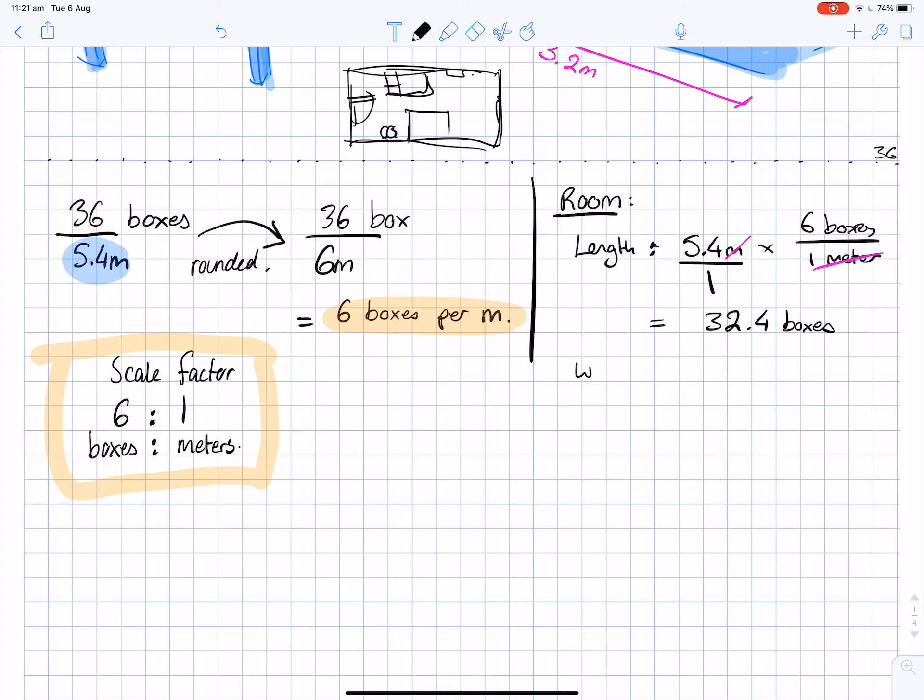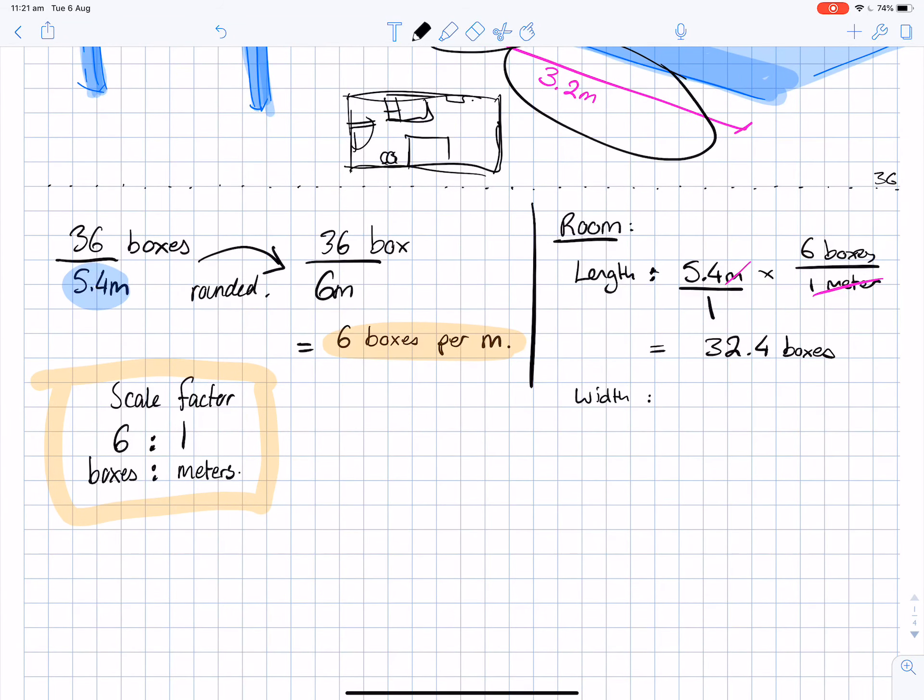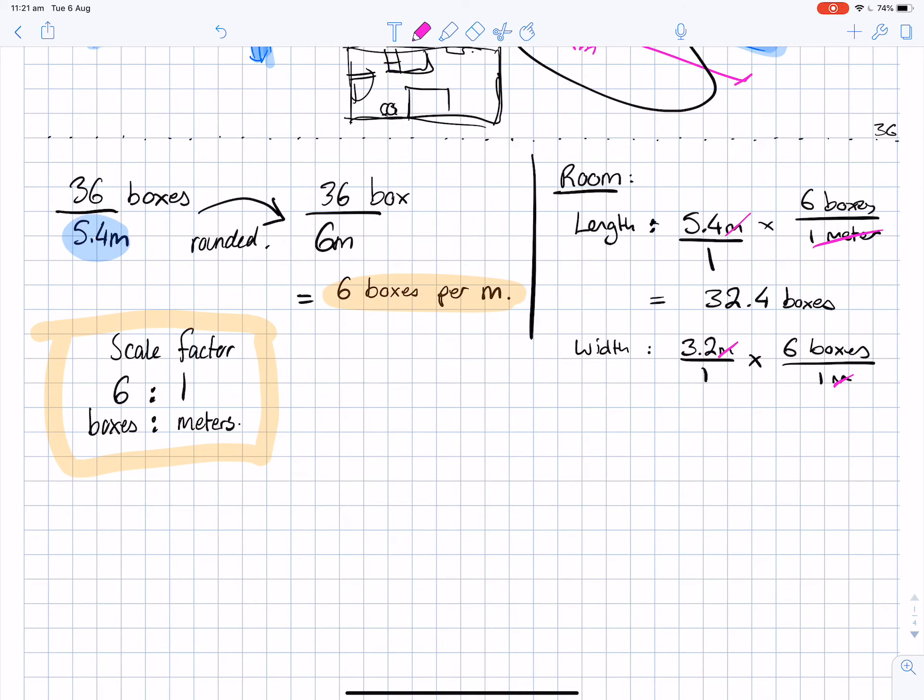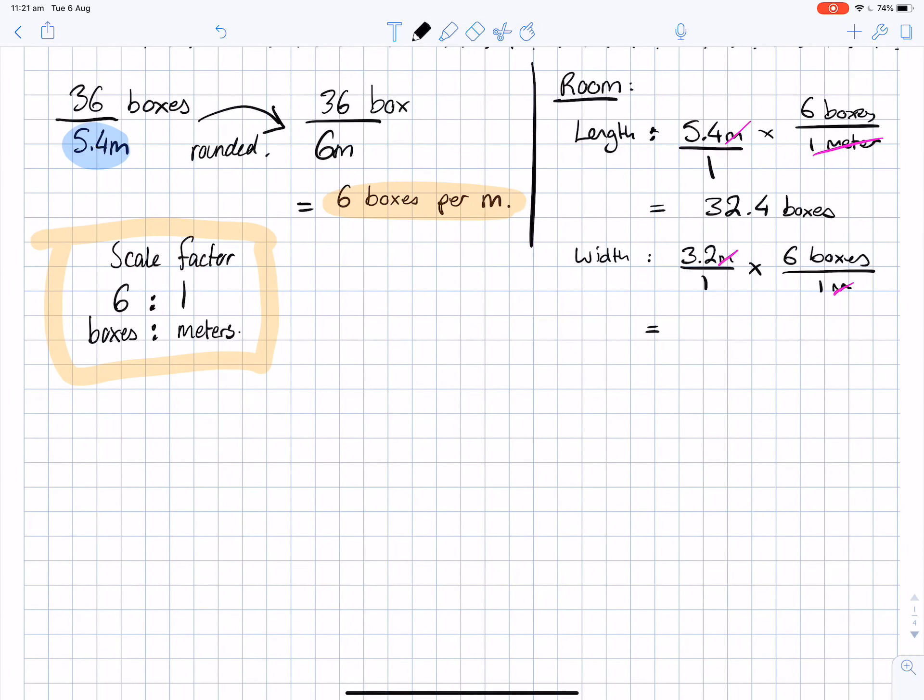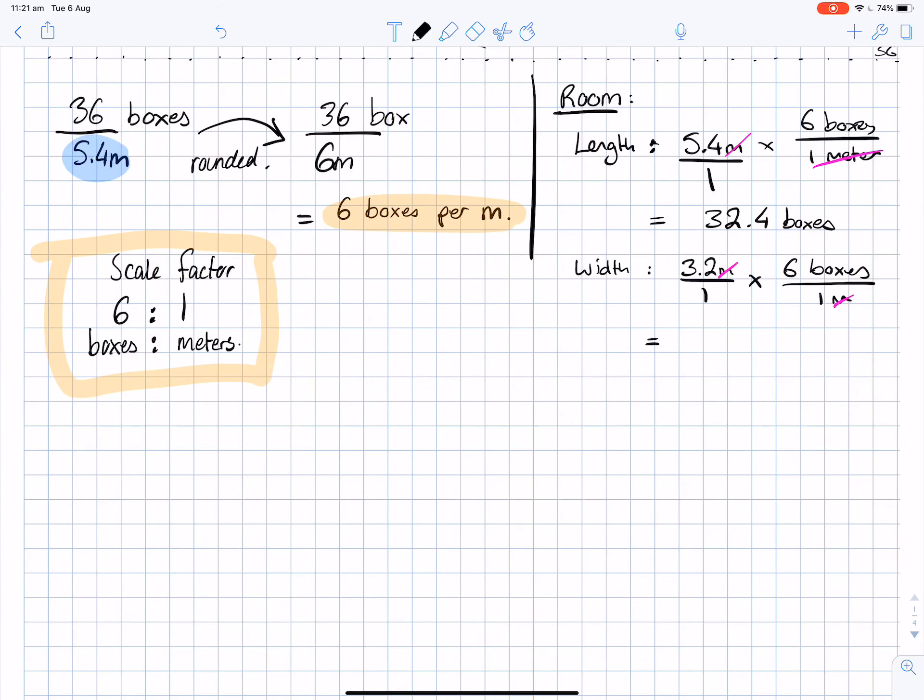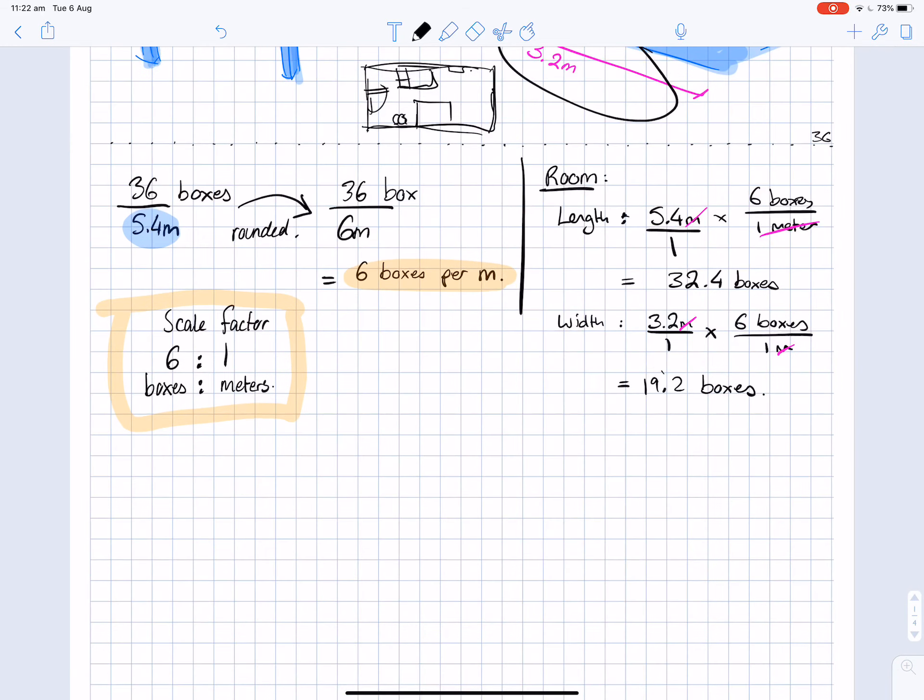The width of the room is 3.2 meters. So 3.2 over one times by six boxes over one meter. We have the same canceling, cross-simplifying. So it's 3.2 times six. Six times two is 12. Six times three is 18 plus the one I saved, that's 19. So I think it's 19.2 boxes. That gives me the dimensions of the bedroom.